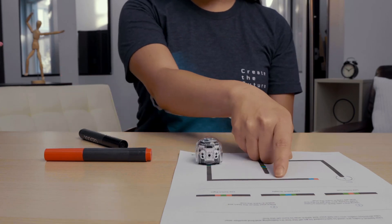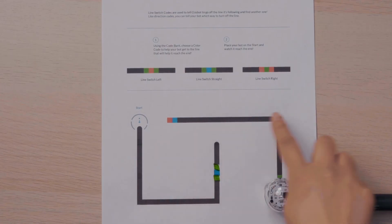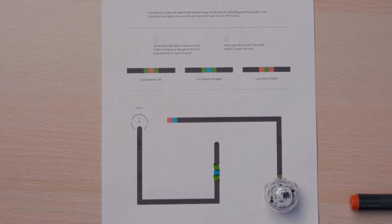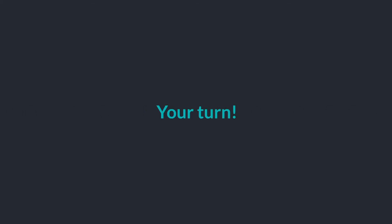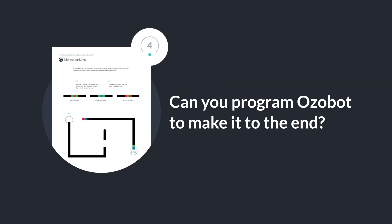In the circumstance that it did turn left, we have a U-turn code here so that it can turn around and make it to the end. Congratulations, we did it. Can you get your bot to line switch on page four?